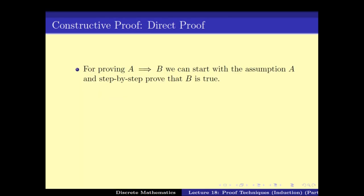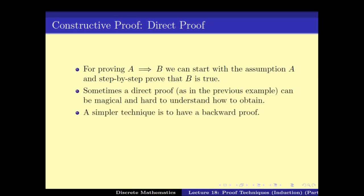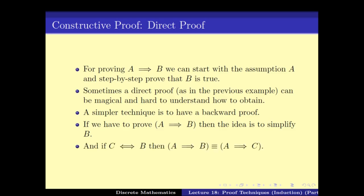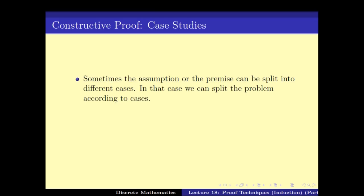Among the different proof techniques, we looked at constructive proofs, particularly direct proofs where you work with A and end up proving B. We can also do a backward proof: first work with B, simplify it to some other form C, and then proving A implies C can be easier. We also saw case studies where you split the assumptions into a finite number of cases and prove each separately — if A can be written as C or D, then A implies B splits into C implies B and D implies B.